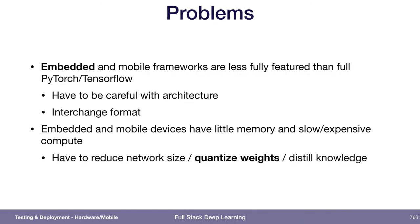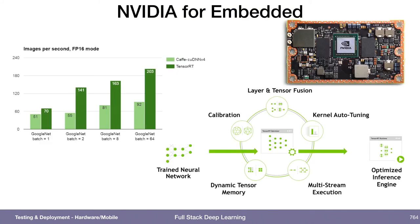For embedded devices, there's NVIDIA — low-powered GPUs for small robotics applications or embedded systems. What you usually do is quantize all your weights to get your model size as small as possible, since you don't have much memory. That means converting to float16 or even 8-bit. TensorRT is the library that helps optimize for those embedded GPUs.